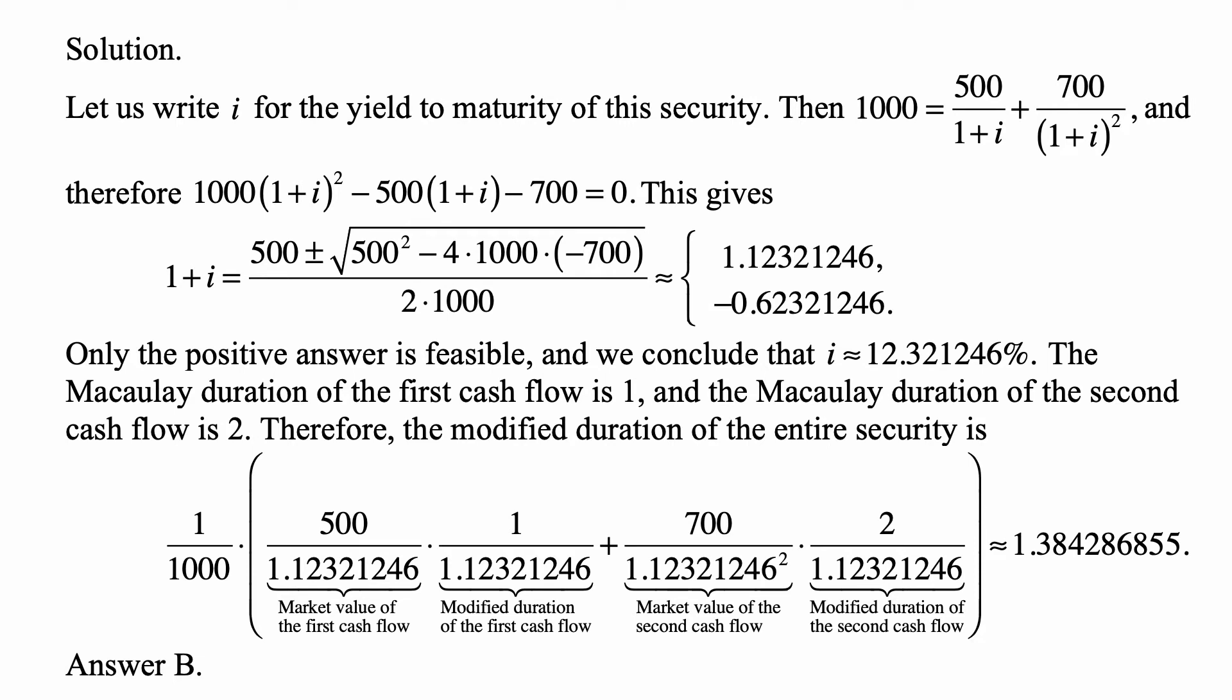Here's the solution. Let us write i for the yield to maturity of the security. Then we know that 1,000 equals 500 over 1 plus i plus 700 divided by 1 plus i squared.